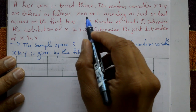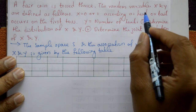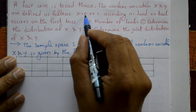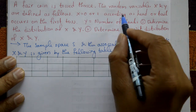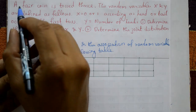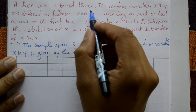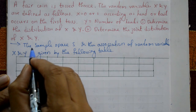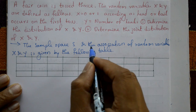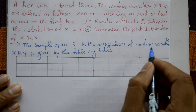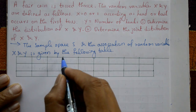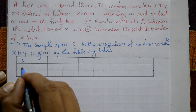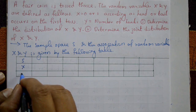X is equal to 0 or 1 according as head or tail — head is 0, tail is 1. A fair coin is tossed thrice, three times. Now the sample space S and the association of random variables X and Y is given by the following table. S is the sample space, and the columns are X and Y.